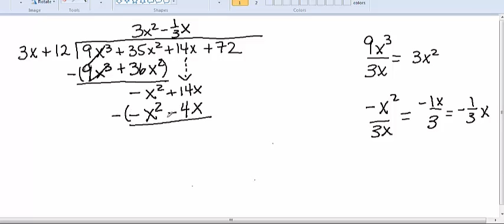Now we're going to subtract the whole thing. Be careful here with your signs. Negative x squared minus a minus x squared is the same as negative x squared plus x squared. That's why these still cancel. 14x minus negative 4x is the same as 14x plus 4x. So that's going to give us a positive 18x. Now we're going to bring down the next term, which is positive 72.